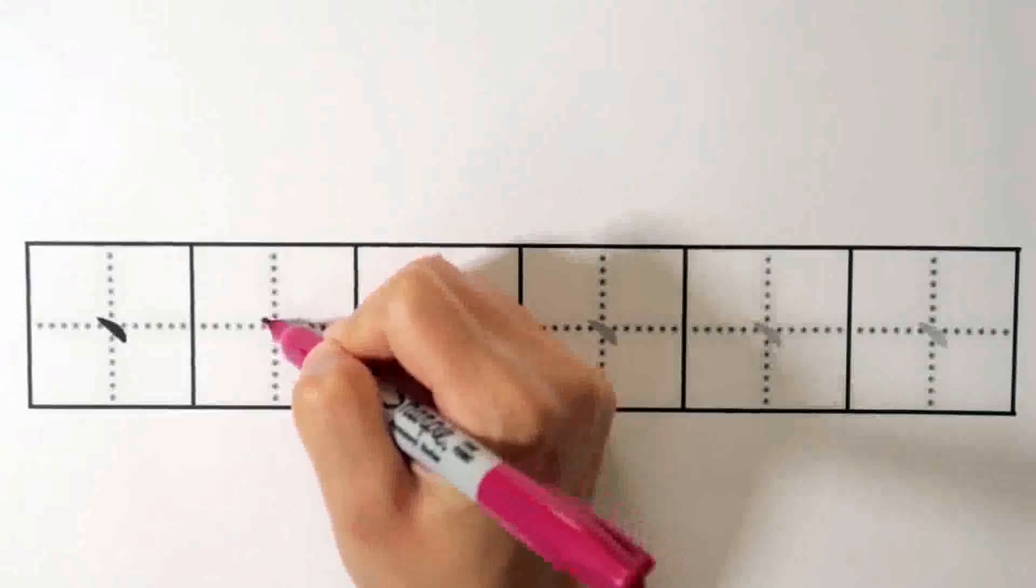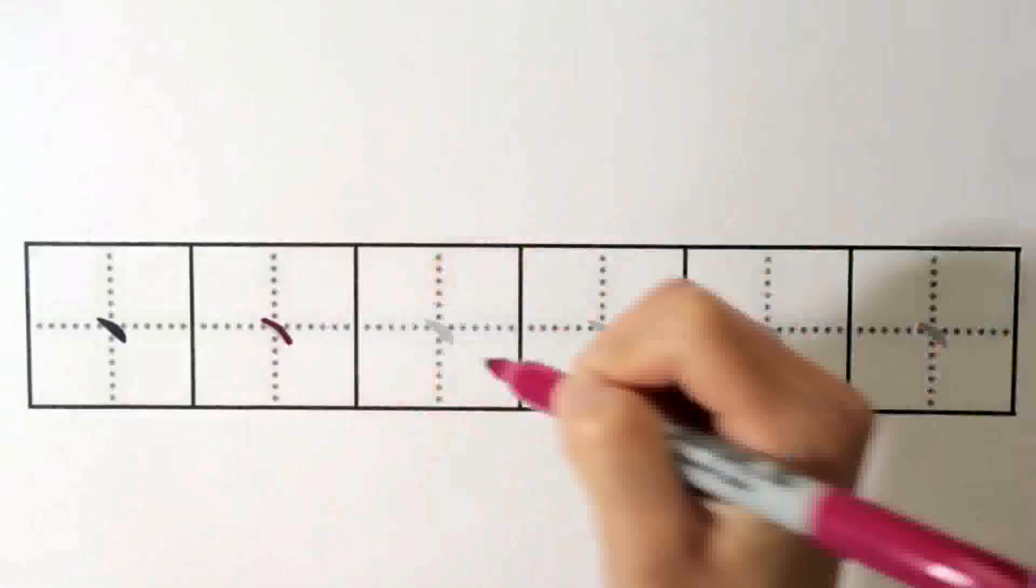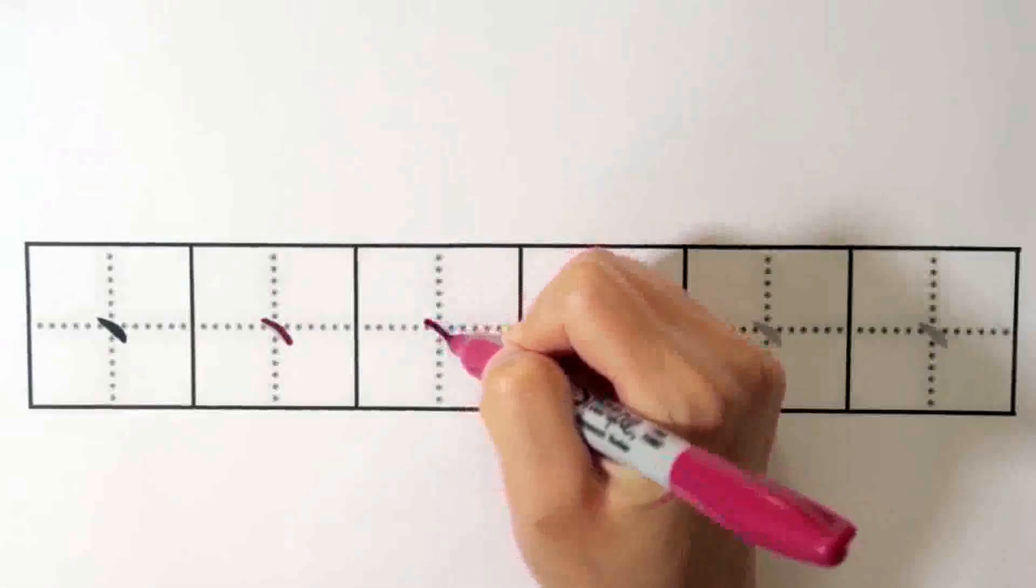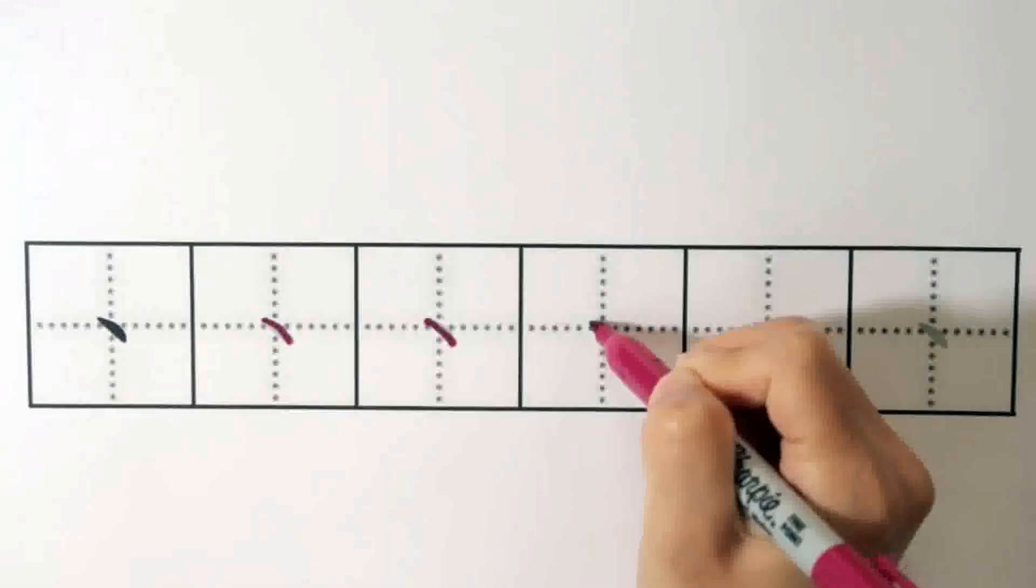Awesome. And our last stroke for today is called dian, or dot. This is what it looks like. And here's how you write it. Try it on the practice sheet a few times.